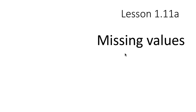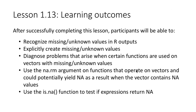Whenever we are dealing with data, it's important to think about how we are going to treat missing values or at least have a representation for them. In this lesson, we will be looking at recognizing unknown values in our outputs or explicitly creating unknown values. Most importantly, we want to diagnose problems that arise when certain functions are used on vectors with missing or unknown values, and then we will use the na.rm argument to ask functions to ignore missing values. Finally, there is a function called is.na() to test if a given value is known or unknown.